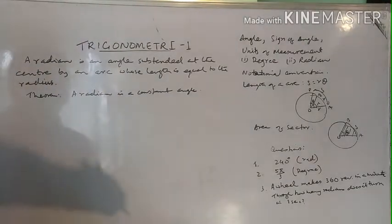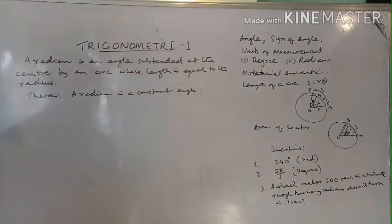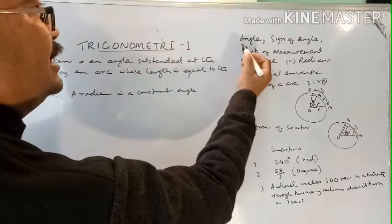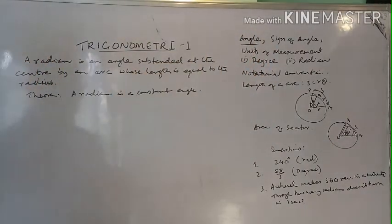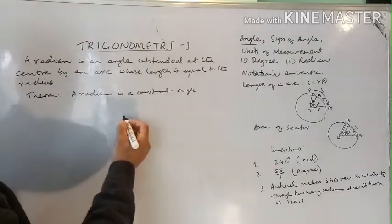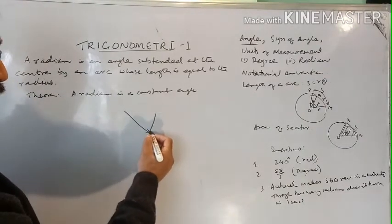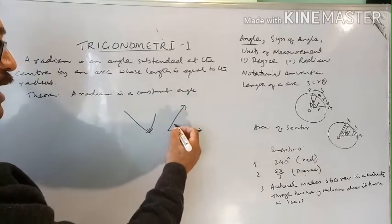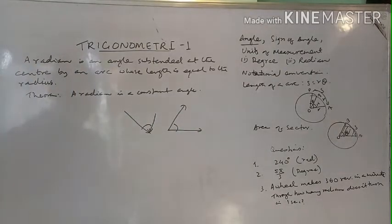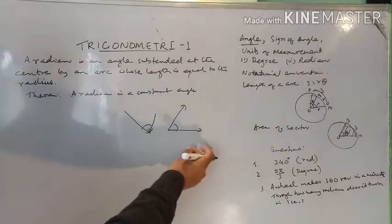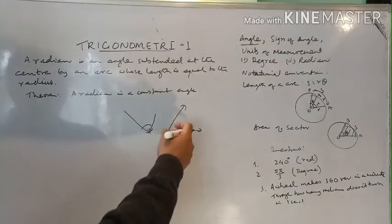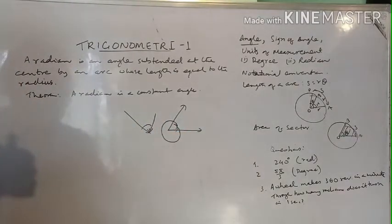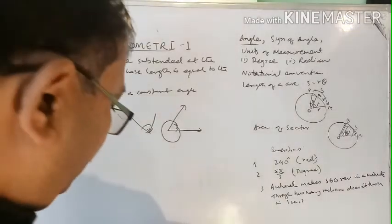We are studying trigonometry. Before we understand the various things in trigonometry, first let's understand the concept of angle. In geometry, when two rays meet at a point or start from a point, an angle is formed. In geometry, the least measure of an angle is zero degree and the largest possible is 360 degree — that is the complete angle.